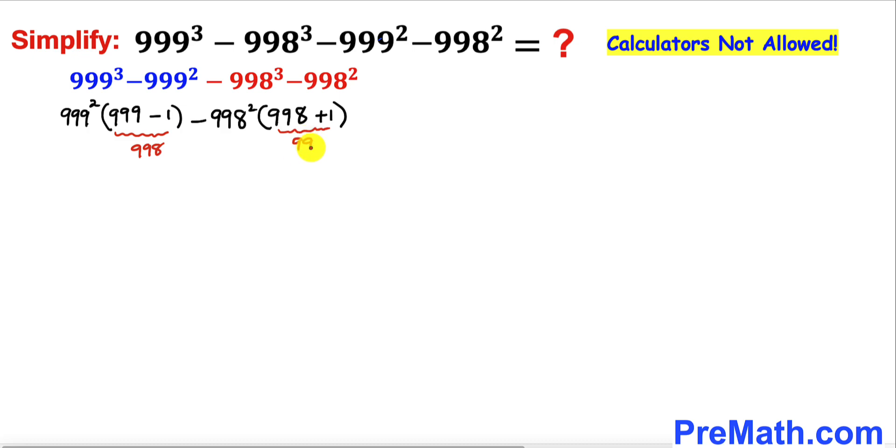Here we can see 999 - 1 is 998, and likewise over here 998 + 1 is 999 as you can see in this next step.